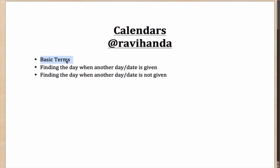By the end of the video, you should be able to do the following: find out the day when another day or date is given. For example, you get questions like 3rd of March was a Wednesday — find out what will be 15th of March. You'll also be able to answer questions like what day of the week was 9th September 2001.